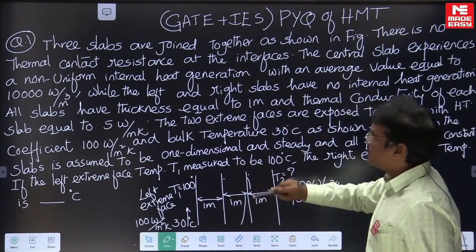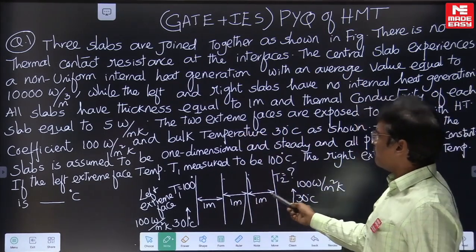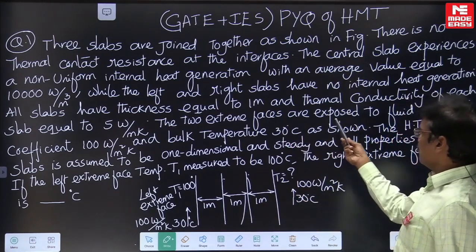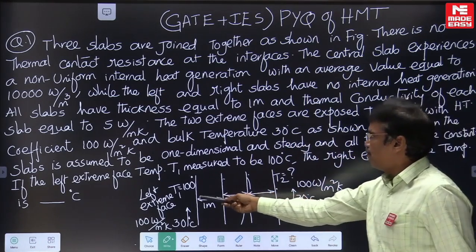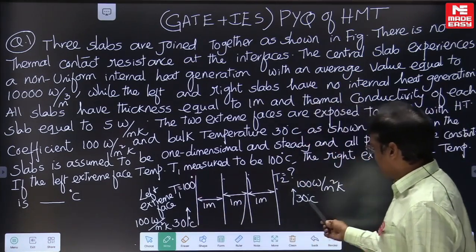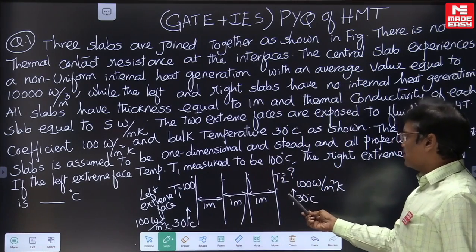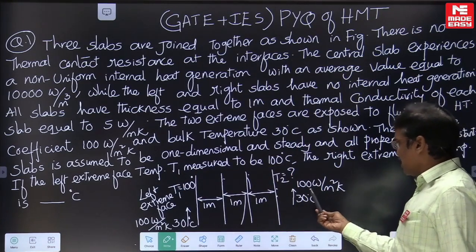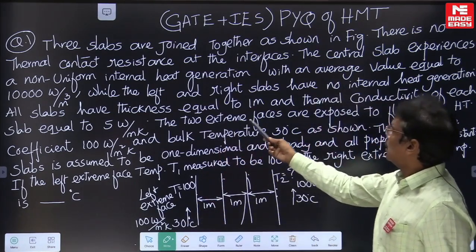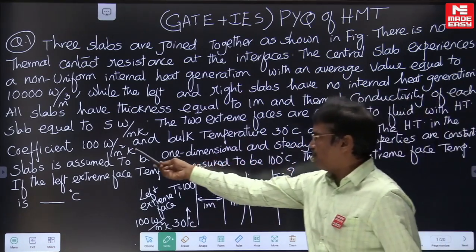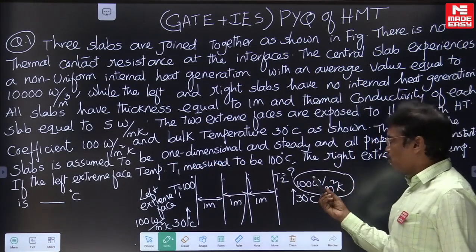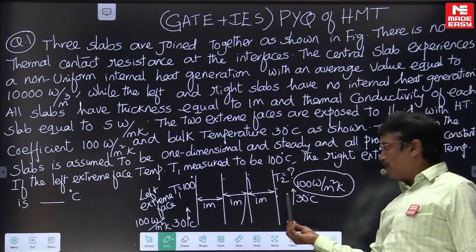All slabs have thickness equal to 1 meter and the thermal conductivity of each slab is 5 Watt per meter Kelvin. The two extreme faces — the right face and left face — are exposed to a fluid moving at a temperature of 30 degrees Celsius. There is convective heat transfer happening from both extreme faces to the fluid, with a heat transfer coefficient of 100 Watt per meter square Kelvin.